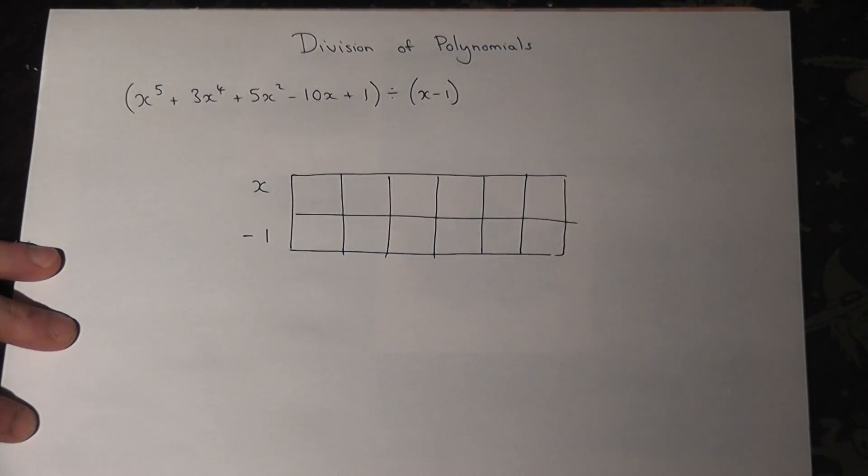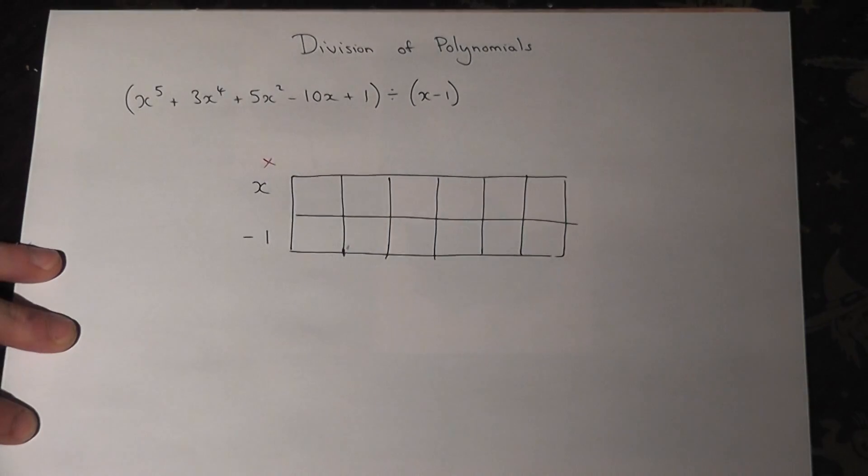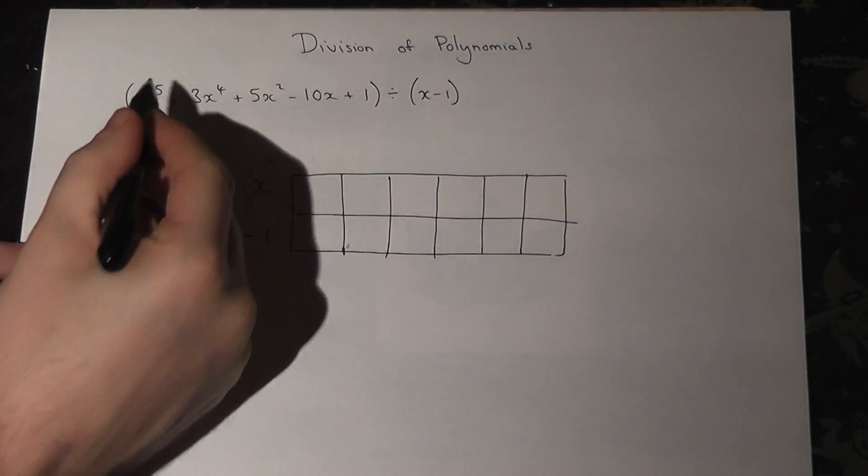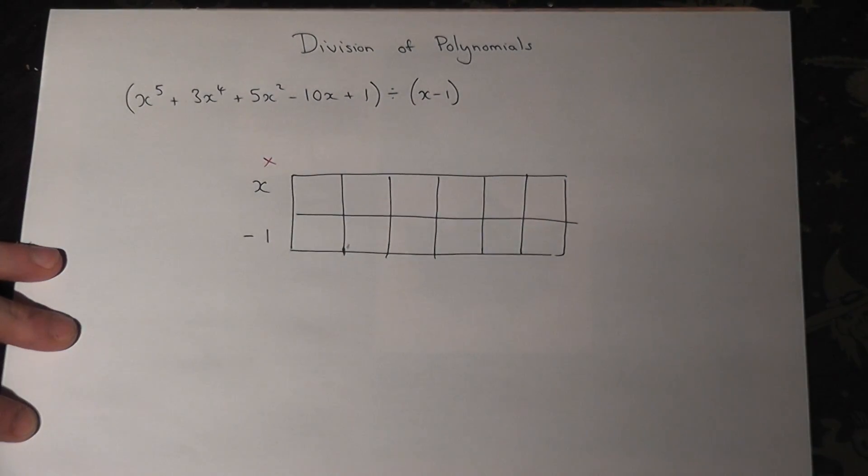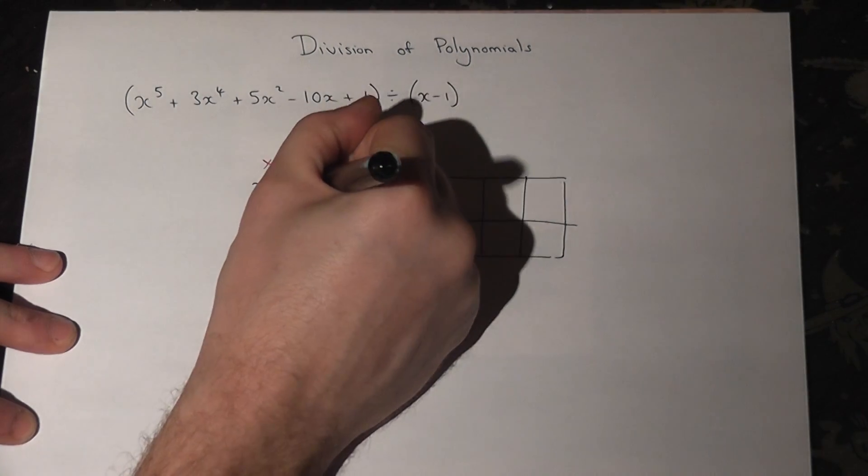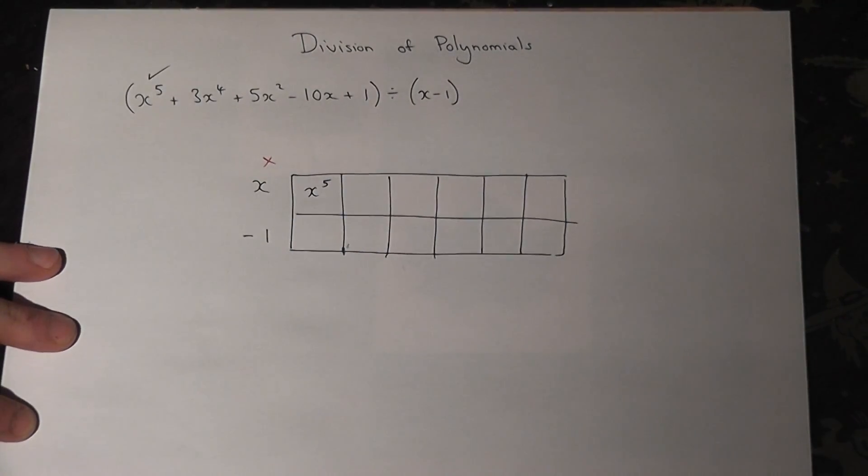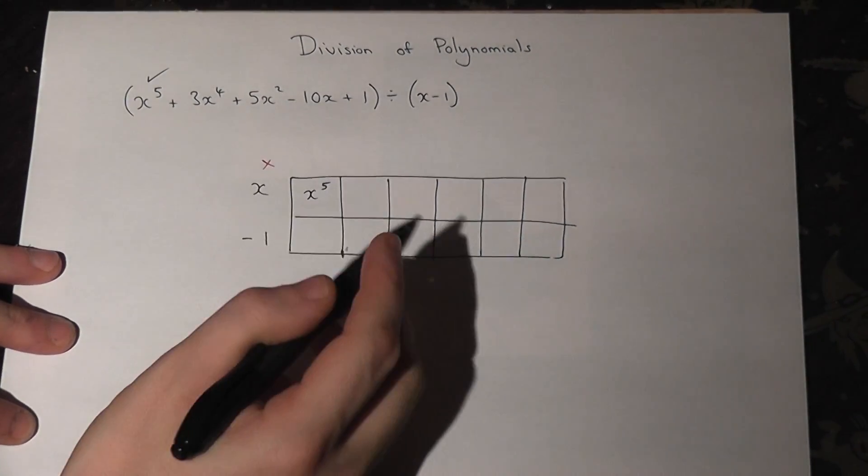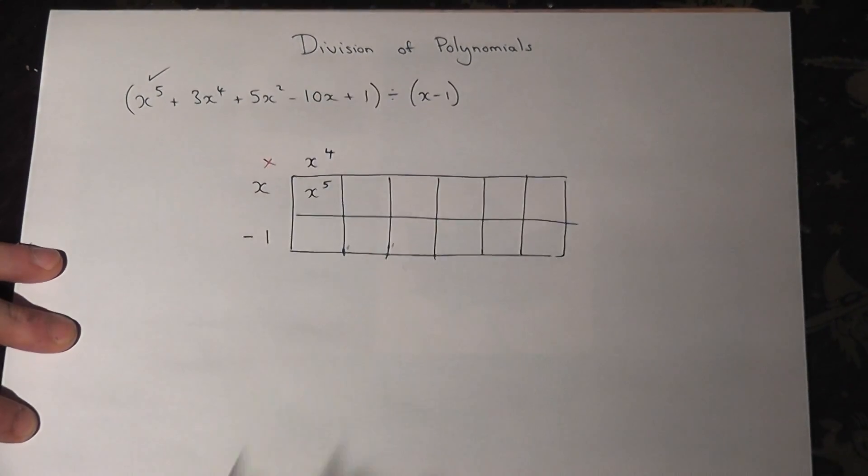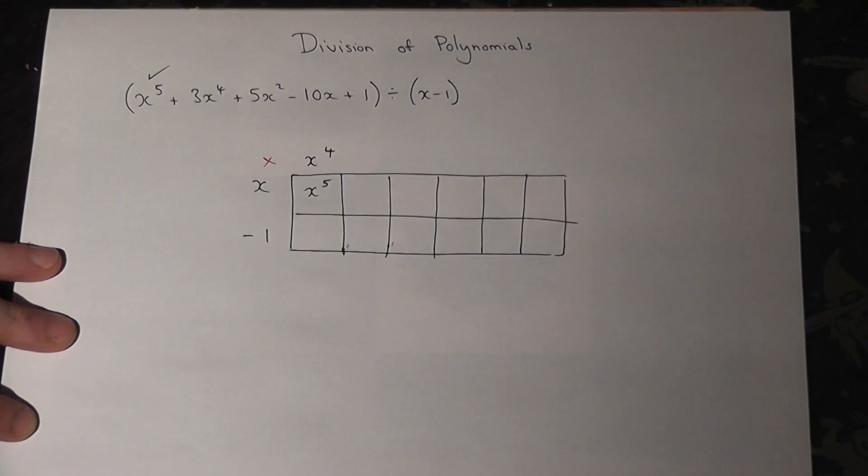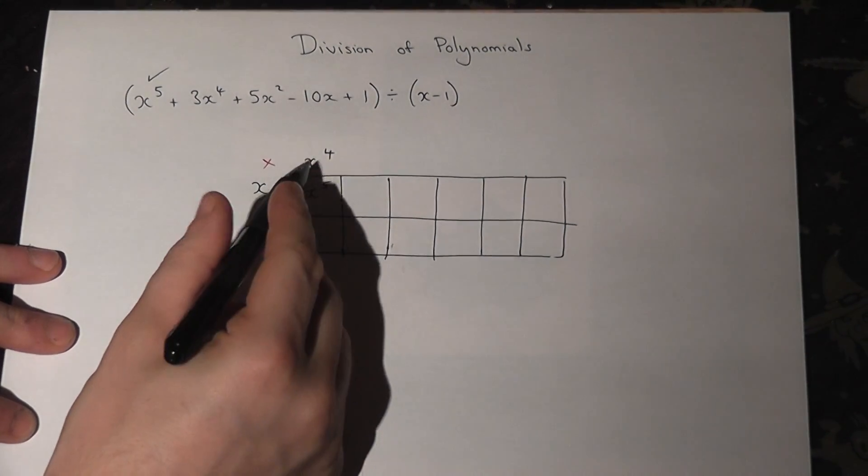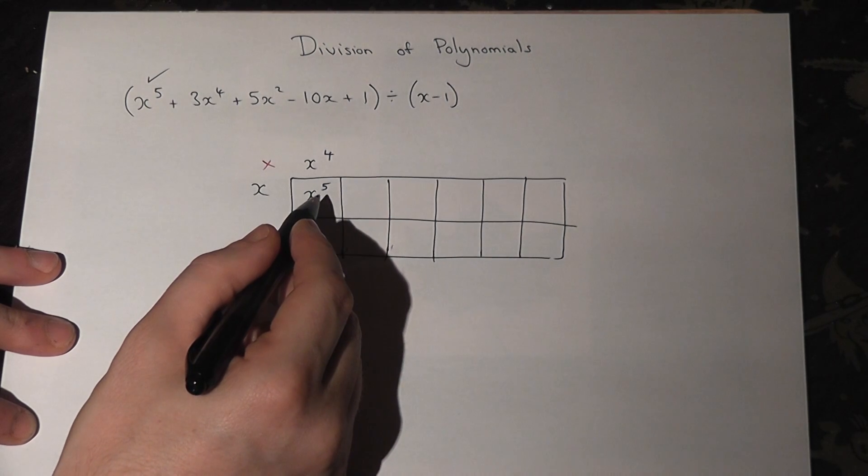Now this technique works out what two things times to make the original expression. I need an x to the power of 5. I've got an x here, so that must be times by x to the power of 4, because x times x to the power of 4 is x to the power of 5.